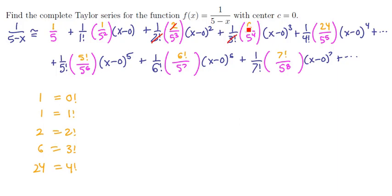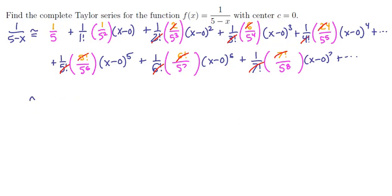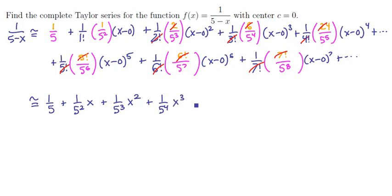Notice that we get cancellations — the 3 factorials cancel, 4 factorials, 5 factorial, 6 factorial, 7 factorial all cancel with the factorial denominators in the Taylor formula. So our Taylor series simplifies to: 1/5 plus (1/5²)x plus (1/5³)x² plus (1/5⁴)x³ plus (1/5⁵)x⁴, and we can keep adding as many terms as we'd like.